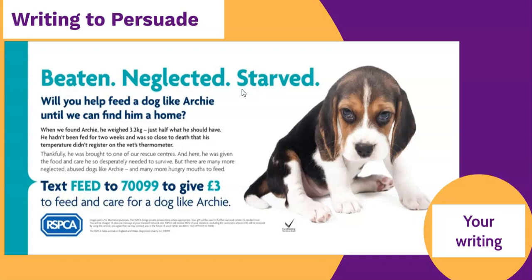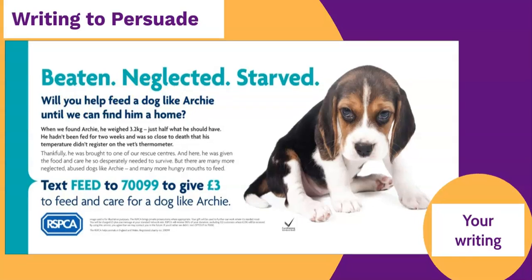After the minor sentences, we have a rhetorical question: 'Will you help feed a dog like Archie until we can find him a home?' The word 'you' encourages the reader to donate money. So the three minor sentences hook the reader into the advertisement and encourage you to part with your money.